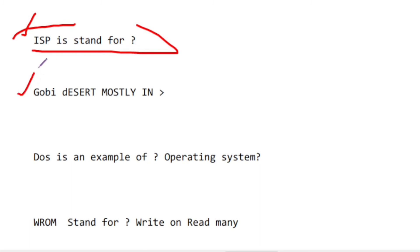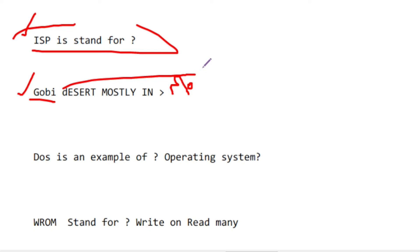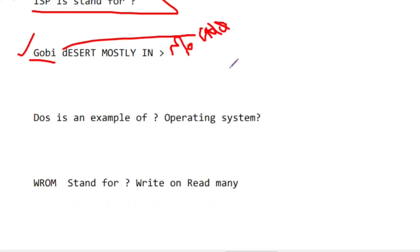The Gobi Desert is mostly in which country? Mongolia. The Gobi Desert is mostly located in Mongolia. DOS is an example of an operating system.